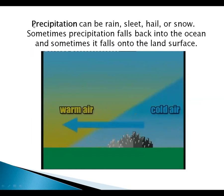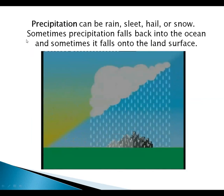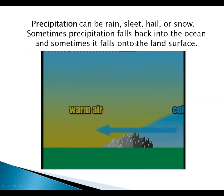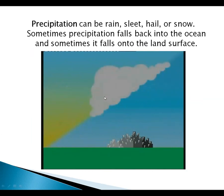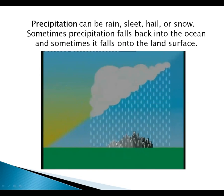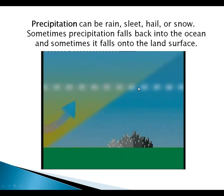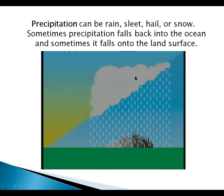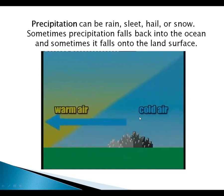The next step is precipitation. Precipitation can be rain, sleet, hail or snow. Sometimes precipitation falls back into the ocean, and sometimes it falls onto the land surface. You can see clearly how precipitation forms: warm air and cold air meet at the dew point, bringing rain, sleet, hail or snow.